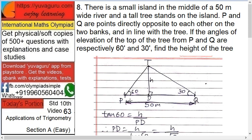Now this is a tree. This D is an island. If the angles of elevation to the top of the tree from P and Q are 60 degrees and 30 degrees respectively, find the height of the tree.